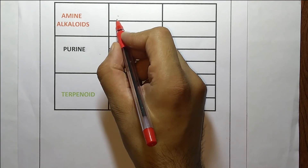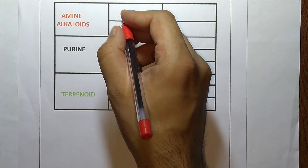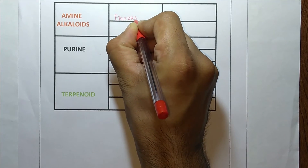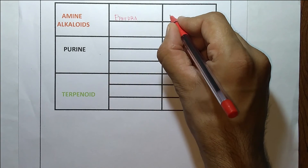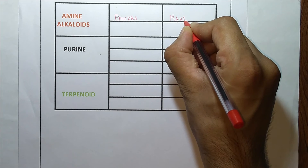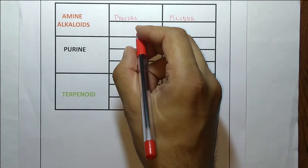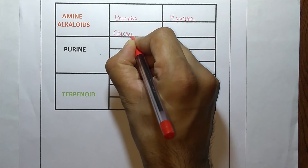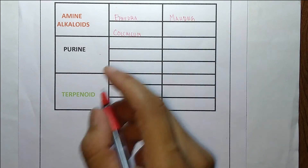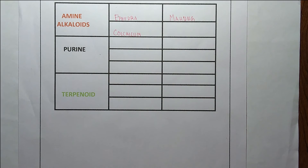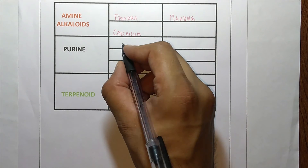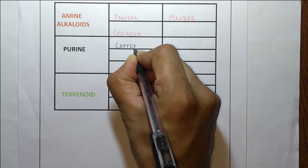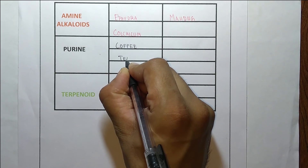The next category is amine alkaloids, with two drugs. The first is ephedra — its synonym is 'mahu.' The next one is colchicum. After that, purine alkaloids include coffee, tea, and coca.